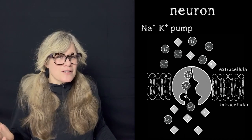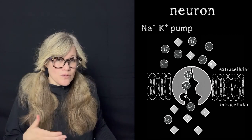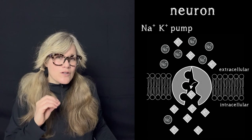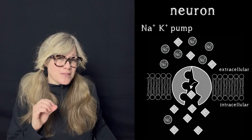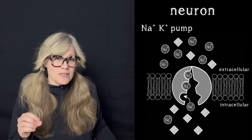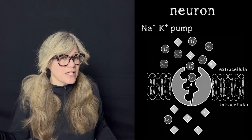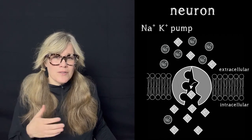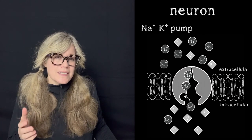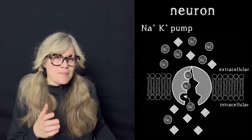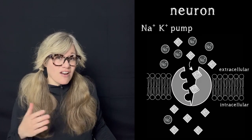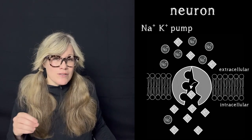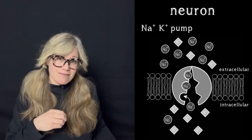The neuron doesn't have to wait for the pump to completely restore these concentrations before it can launch another action potential, because there are still loads of other sodium and potassium ions on their respective sides of the membrane. But it does need to keep pumping to keep the concentrations at odds — more potassium inside than outside and more sodium outside than inside.